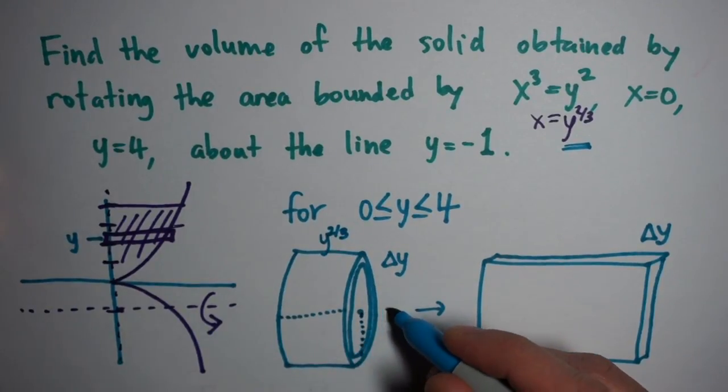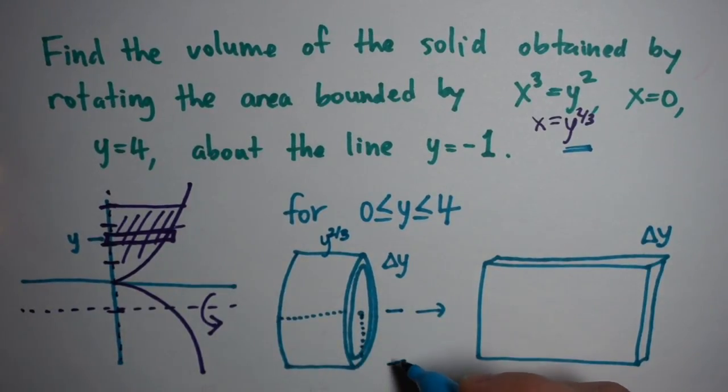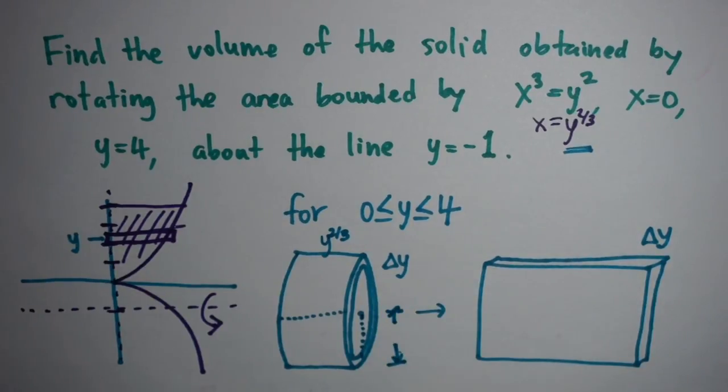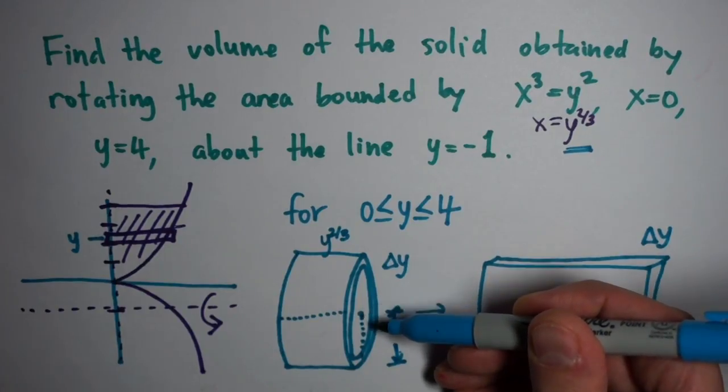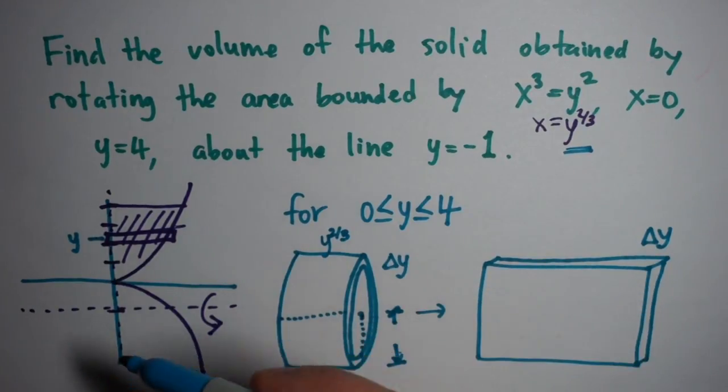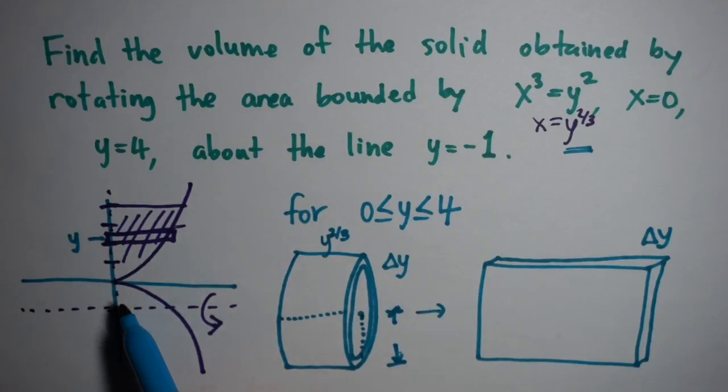The radius is given by how far the rectangle is from the axis of rotation. In this case, the height of the rectangle is y. The axis of rotation is x = -1. So the distance between the two is y to the y-axis, plus one more to the line of rotation. That's going to be y + 1.